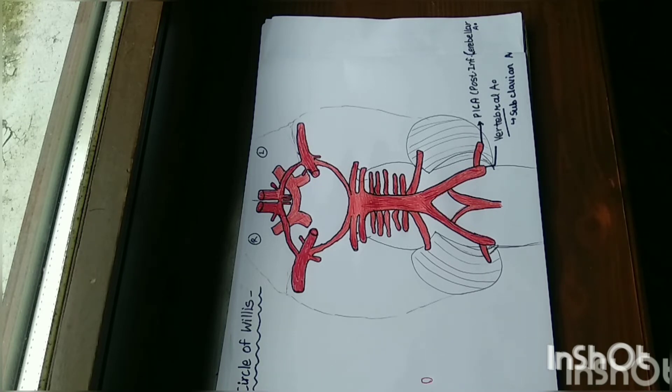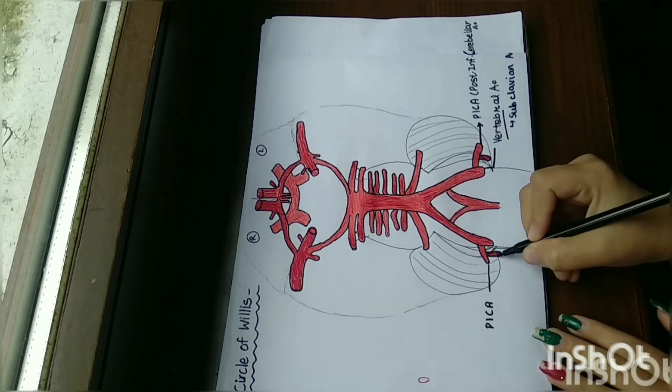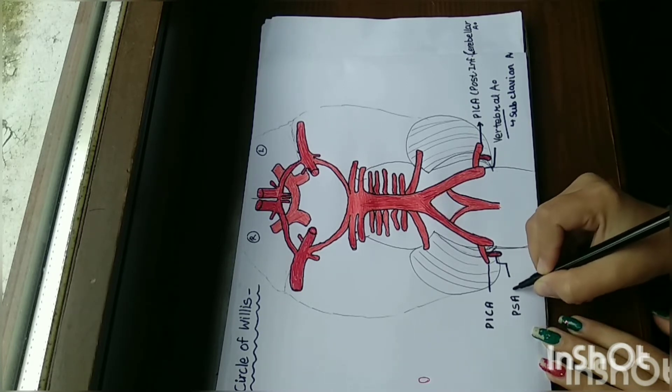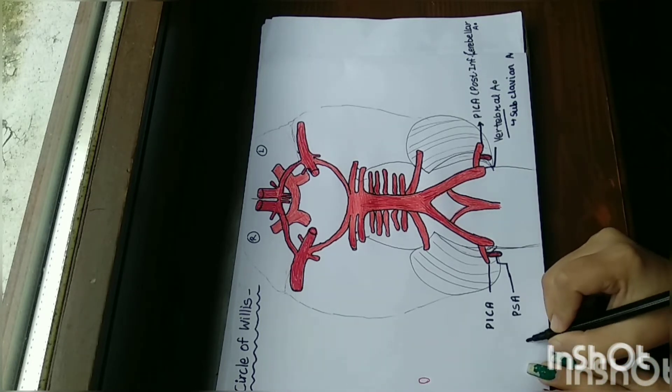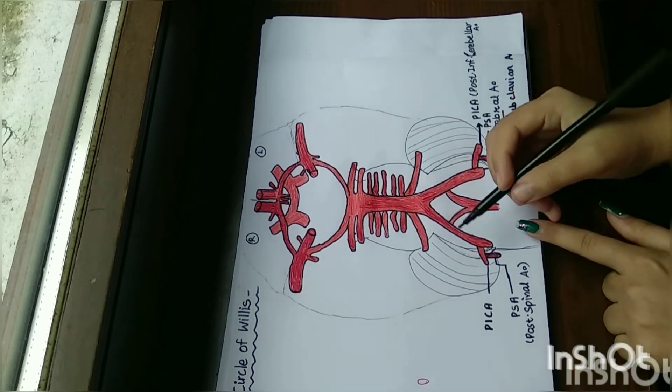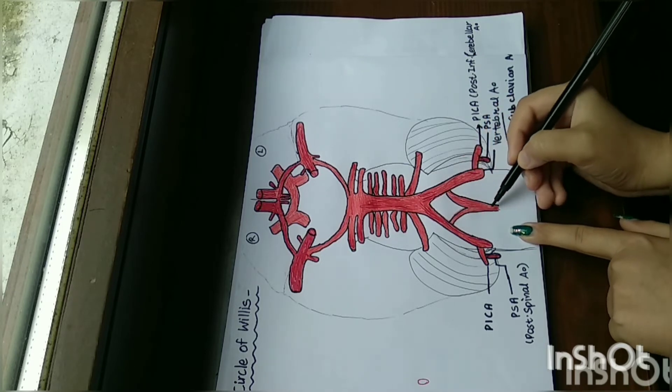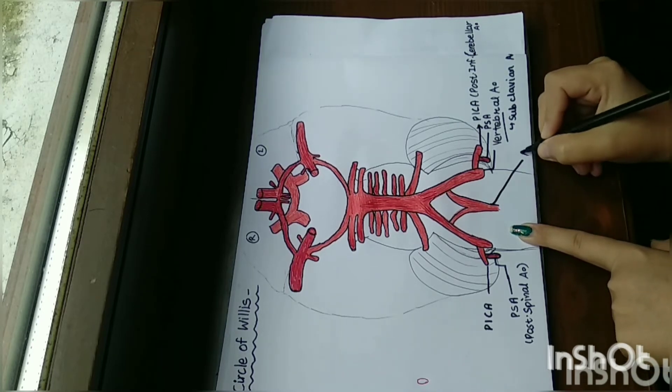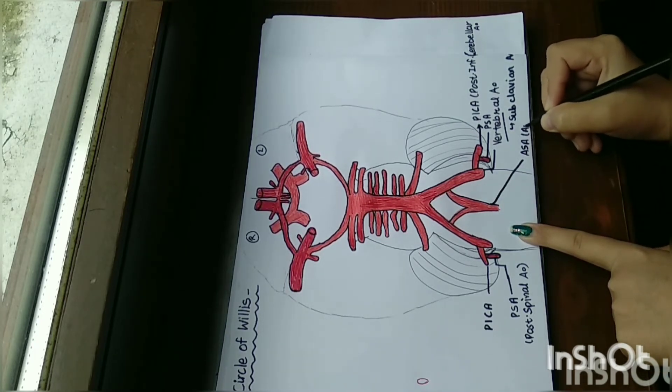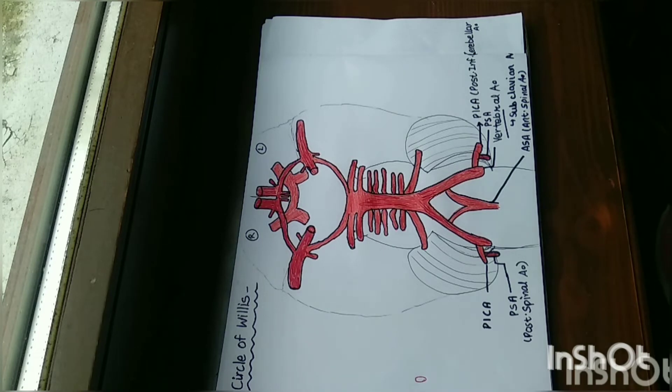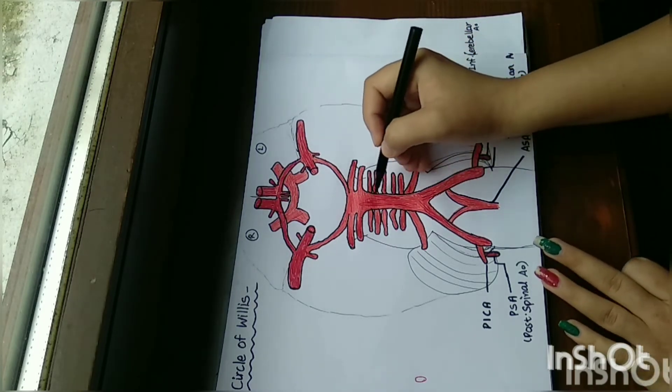These small branches are known as posterior spinal arteries. PICA goes upward and gives a branch which comes downward, known as the anterior spinal artery. The vertebral arteries fuse at the point of medullary junction and form the basilar artery.